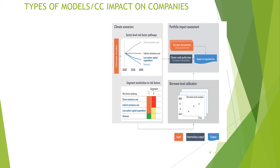Revenue can be affected by any of these factors. Sensitivities are encapsulated into the model. Borrower-level calibration takes all borrower characteristics from various data sources to determine an impact on expected loss. From there, the effect of climate change on different companies can be calculated. The expected loss formula is: Expected Loss = Probability of Default × Loss Given Default × Exposure at Default. Loss given default is a percentage, probability of default is a percentage, and exposure at default is a cash value.